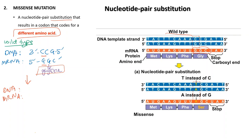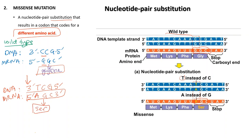If nucleotide pair substitution occurs and changes the first base pair of the codon from cytosine to thymine, the DNA template reads 3' TGC 5', and the mRNA codon produced reads 5' AGC 3'. This mRNA codon codes for the amino acid serine during translation instead of glycine — demonstrating that missense mutation involves a change in the codon that codes for a different amino acid.